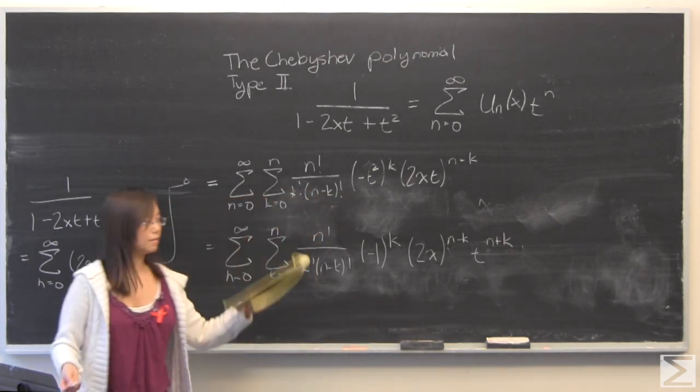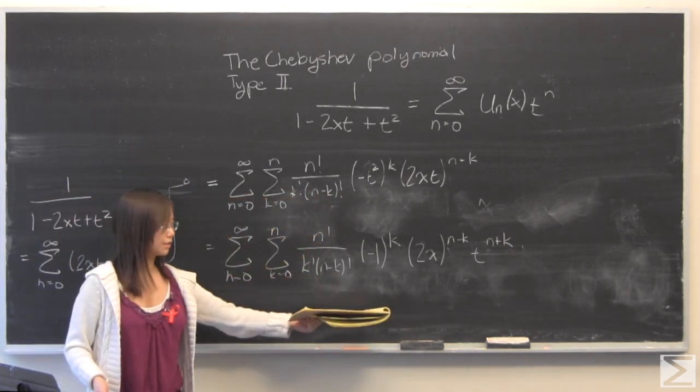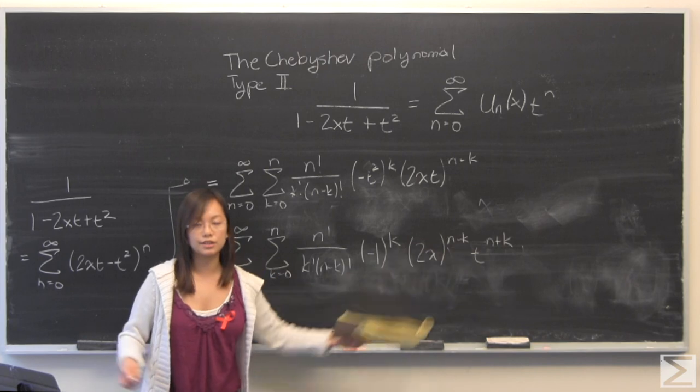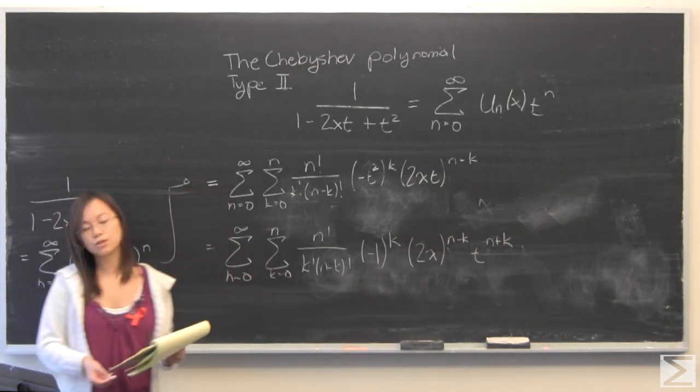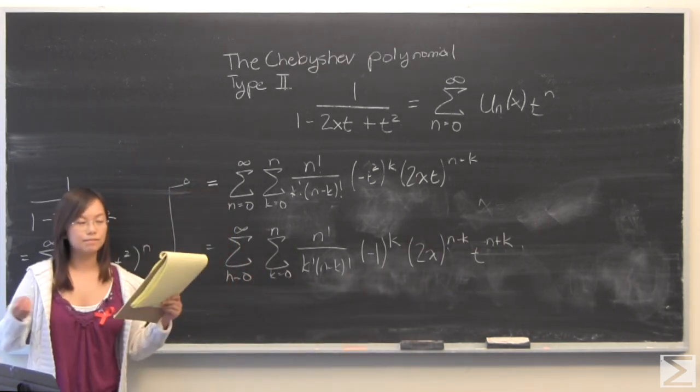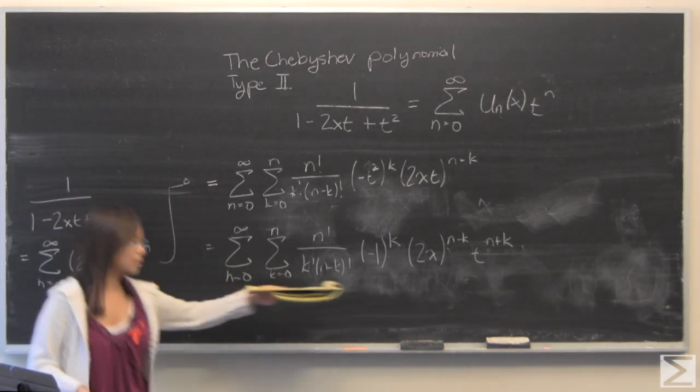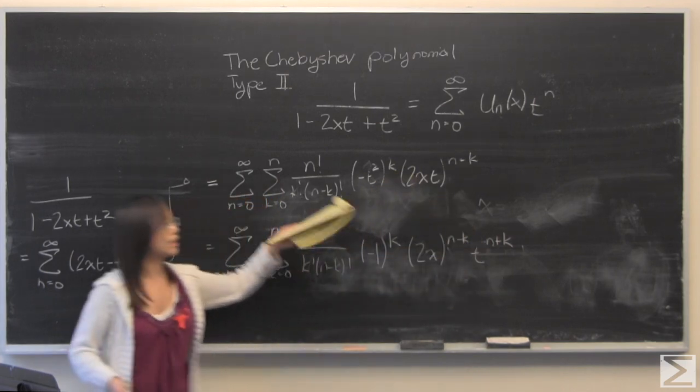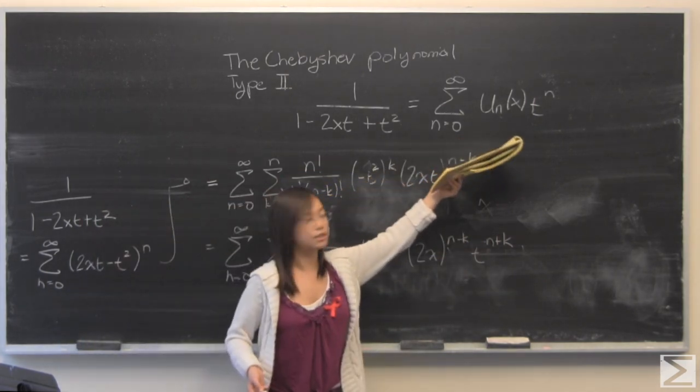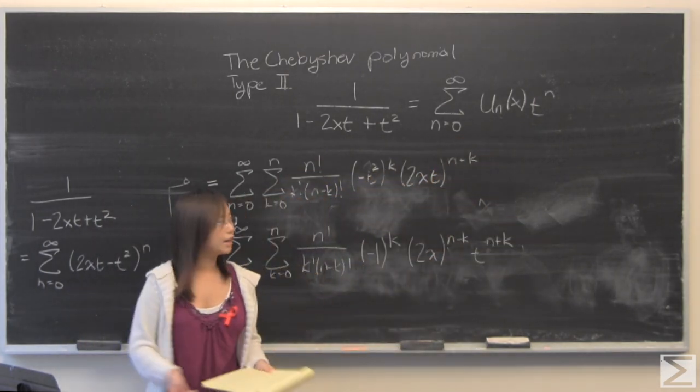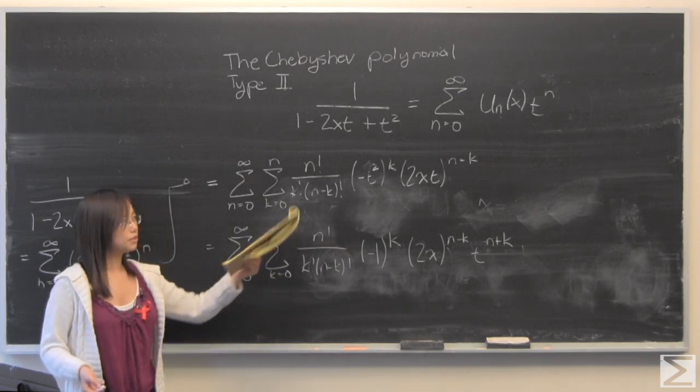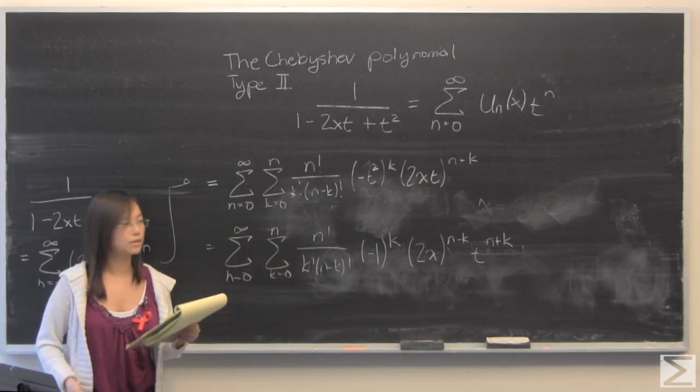By combining, we get this as a result. The next step is to do a very clever substitution. What we want to do is make this t to the n plus k. We want to line that up with what we have up here, which is t to the power of n. The thing about the variables for the series, they're kind of like these dummy variables.